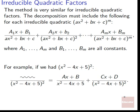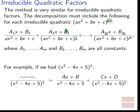For irreducible quadratic factors, the method is similar. The decomposition must include, for each irreducible quadratic Ax²+Bx+C to the M, the sum (A1x+B1) over (Ax²+Bx+C) + (A2x+B2) over (Ax²+Bx+C)² + ... up to the Mth step. Notice the numerators are linear expressions because the denominators are quadratic. All the constants A1 through AM and B1 through BM are just constants we'll determine later.